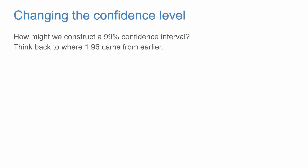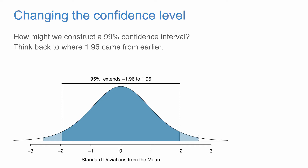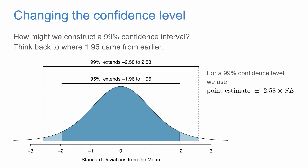So how do we figure out how wide our confidence interval should be, and how might we construct a 99% confidence interval? Let's think back to where the 1.96 came from when we were constructing the 95% confidence interval. We found that negative 1.96 to 1.96 captured 95% of the normal distribution. Similarly, we're going to look for values — in this case negative 2.58 to 2.58 — which capture 99% of the distribution. This means that for a 99% confidence interval, we'd use a point estimate plus minus 2.58 times the standard error, if our point estimate is normally distributed.